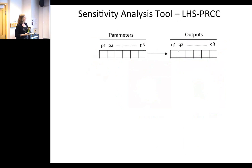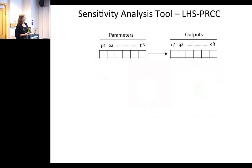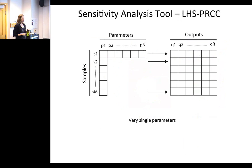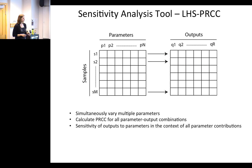Next I'll talk about the sensitivity analysis tool, which we call LHS-PRCC. Basically, you have a model with N parameters and R outputs, and you want to know how sensitive each output is to each parameter. You could vary each parameter and look at its effect on outcomes, but parameter one might have a completely different effect for different values of the other N-minus-one parameters, so you need to vary all parameters at once. We use Latin hypercube sampling, or LHS, which thoroughly and equally samples the parameter ranges. We vary all parameters at once and calculate their partial rank correlation coefficients with each output, giving us each parameter's influence on the output in the context of all other parameters.